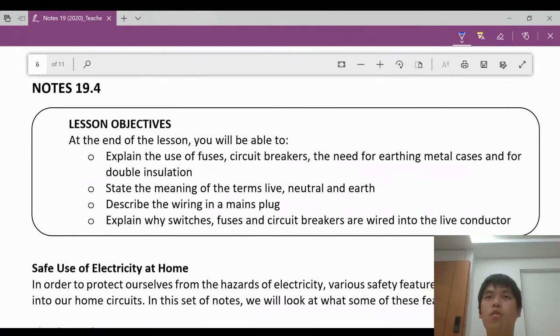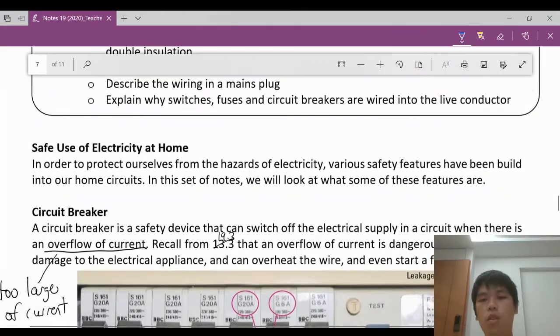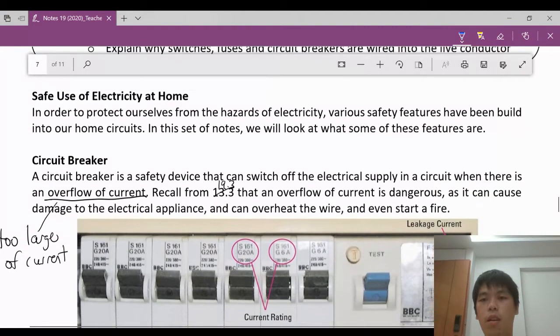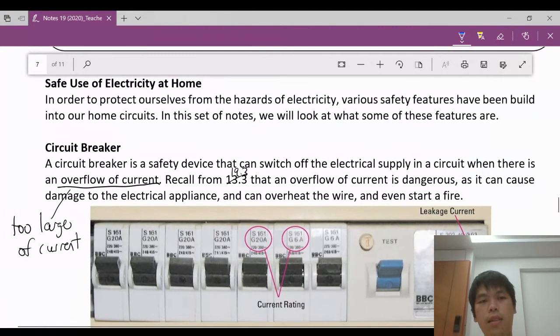The three hazards will be either overloading, damage insulation, or at the same time because of damp conditions. So what are the mechanisms and what are the devices that we have in our house that actually can protect us? So we have quite a number of features. Let's follow through. Let's start off first. We start off with a circuit breaker.